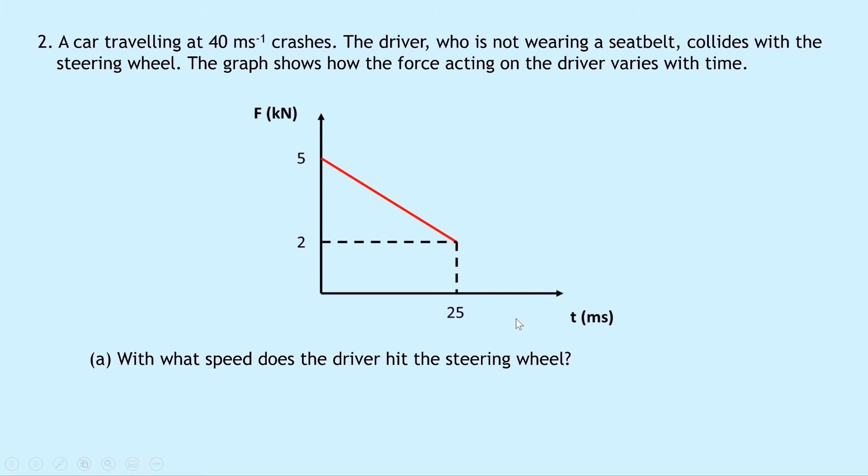Question two says that a car traveling at 40 meters per second crashes. The driver who is not wearing a seat belt collides with the steering wheel. The graph shows how the force acting on the driver varies with time. So we've got our force-time graph here and part a says with what speed does the driver hit the steering wheel? Well first of all notice that we've got kilonewtons for our force and we've got milliseconds for our time. So we need to take those two into account when we're taking numbers from the graph.